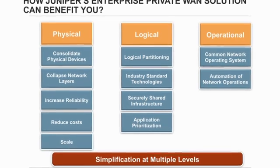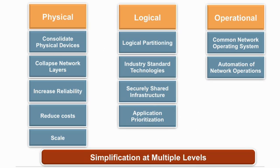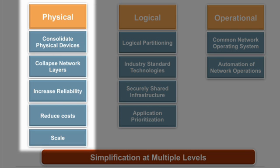The private WAN solution is based on innovative platforms that provide physical level simplification by collapsing network layers and consolidating the number of physical devices. There are fewer points of failure in the network, increased reliability as a result, and overall reduction in CAPEX and OPEX. You also get the scale and density that you require for your business operations.